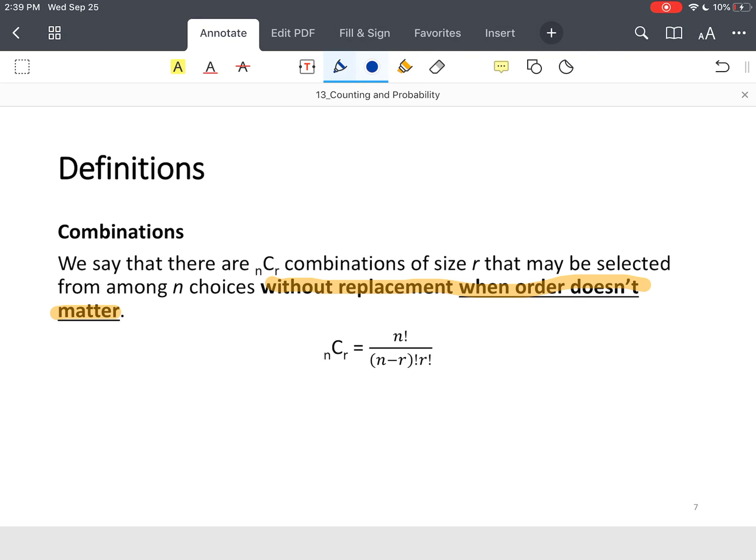Some definitions are similar, but the only thing that distinguishes a permutation from a combination is that in a combination order doesn't matter. So if you look at the formula, the formula will be different because it's taken into account that order doesn't matter. So let's look at a quick example.